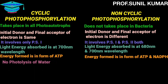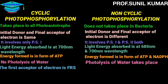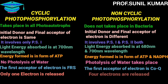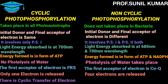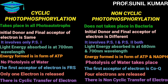In cyclic photophosphorylation, there is no photolysis of water; in non-cyclic, photolysis of water takes place. The first electron acceptor in cyclic is FRs; in non-cyclic it is coenzyme Q. In cyclic, only one electron is released; in non-cyclic, four electrons are released to balance the reaction. In cyclic there is cyclic transfer of electrons; in non-cyclic there is non-cyclic transfer of electrons.